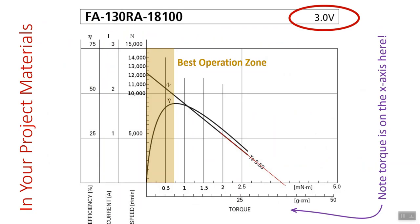Here's the torque-speed curve for the FA-130RA-18100 — these are the ones supplied in the gearboxes. Note that this is flipped now: torque is on the horizontal axis and rotational speed is on the vertical. This also has current and efficiency plotted. The numbers next to the vertical axis are the rotational speed in RPM. There's the straight line curve, which is the actual speed as a function of torque, extrapolated down to a stall torque of 3.53 milli-newton-meters — not very much, but there it is. The curved line is the efficiency.